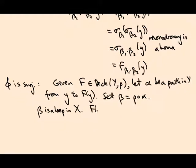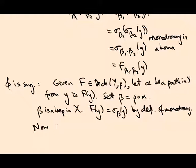Moreover, F(y) = σᵦ(y) by definition of monodromy. σᵦ(y) is the endpoint of the unique lift of β that starts at y. Well, α is the unique lift of β that starts at y and ends at F(y).